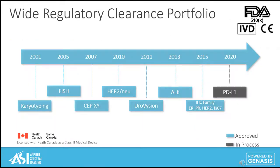ASI currently has the largest 510(k) FDA and patent portfolio in the industry, beginning in 2001 with the approval of our karyotyping software, followed by our FISH portfolio between 2005 for manual FISH and FISHView, through 2013 for FISH automation, spot counting, and the IHC breast panel in 2015. Our current goal is to earn FDA approval for PD-1 non-small cell lung cancer by the end of 2020. With a wide FDA clearance portfolio, our customers can rest assured that every ASI application has been precisely tested for compliance and clinical use.